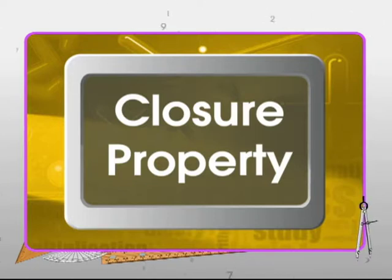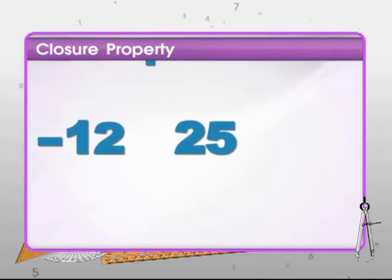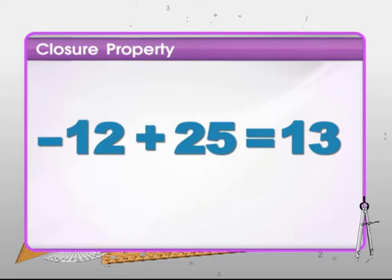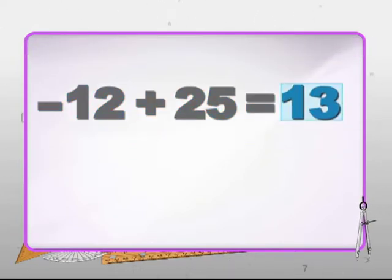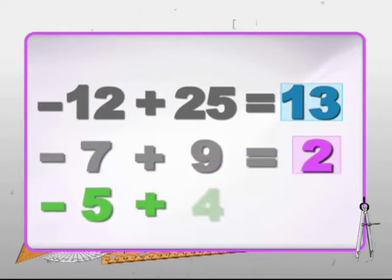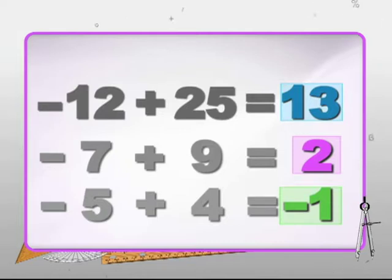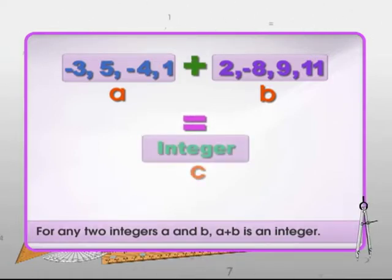The first property is the closure property of integers. Take any two integers, say minus 12 and 25. On adding, we get 13, which is an integer itself. This holds true for any two integers being added. In general, for any two integers a and b, a plus b equals c, which is an integer.